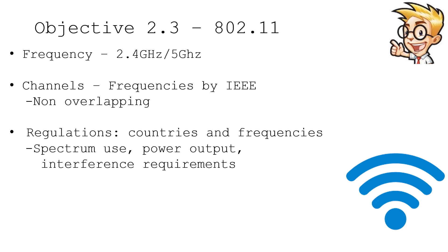If you're using an 802.11 network, there are a number of technical specifications you need to be aware of. One is the frequency in use. There are many standards that use the 2.4 gigahertz range, and other standards that use the 5 gigahertz range, and some of them use both of these ranges to communicate.